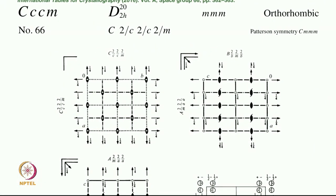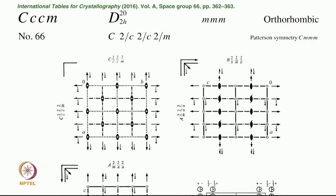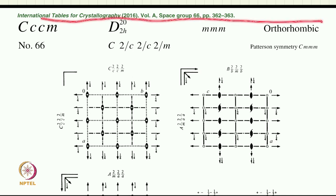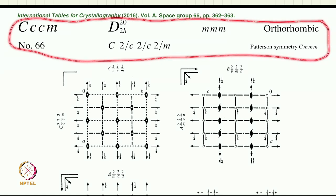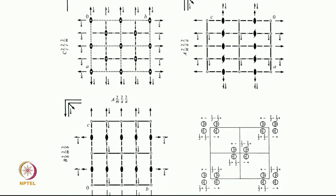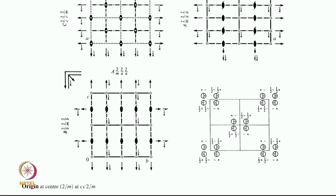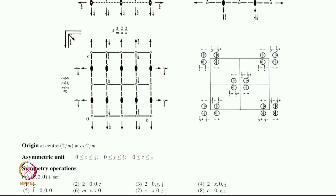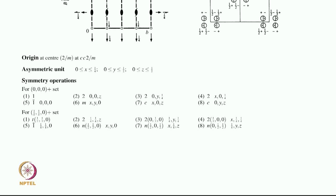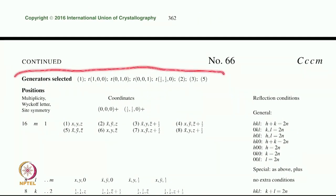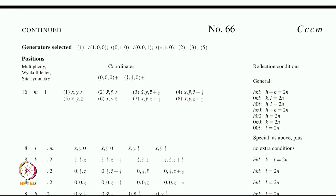Back to space group number 66. We have looked at much of the details on this page — the headline giving the name and number of the space group, the point group and crystal system, three symmetry element diagrams (the AB, BC, and CA projections for orthorhombic), and the general position diagram. We also discussed origin, asymmetric unit, and symmetry operations. On the next page, after 'generators selected,' comes today's topic: positions.